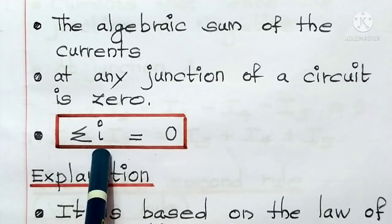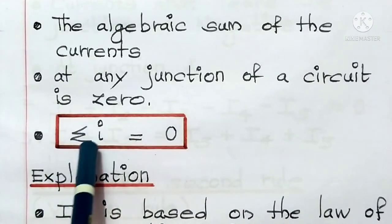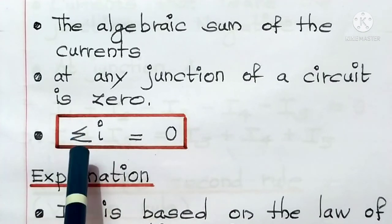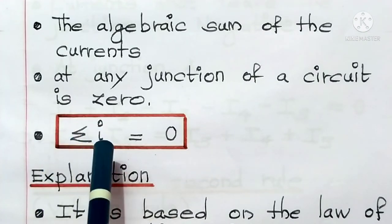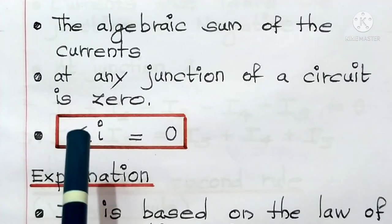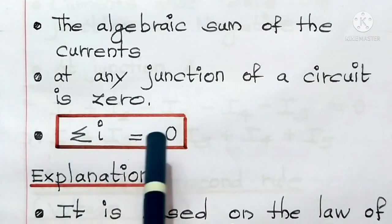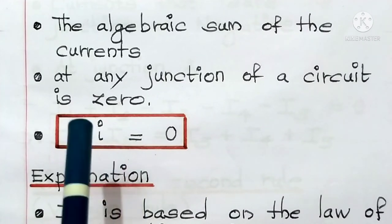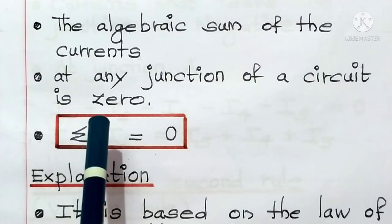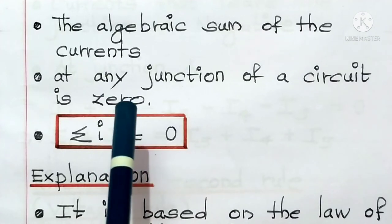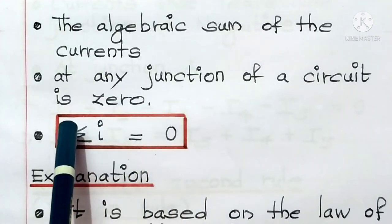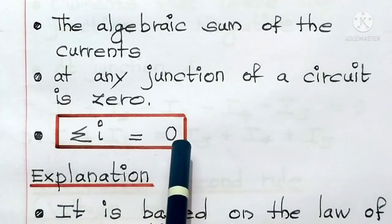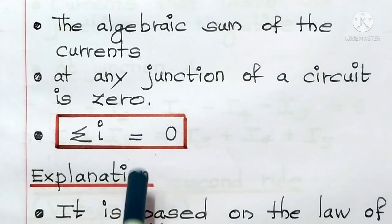Here, I stands for current and sigma stands for summation. It means when we add up all the currents that enter the junction and all the currents that leave the junction, then it will become zero. Even if you forget to write the definition in the exam, you better write down the equation at least.